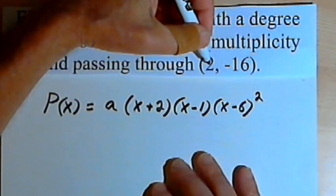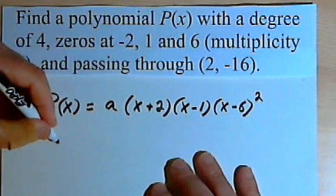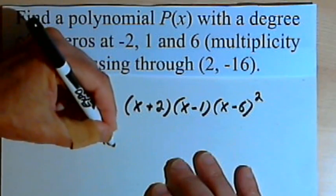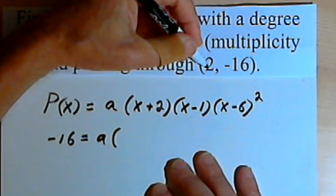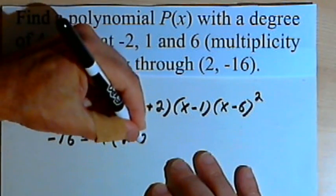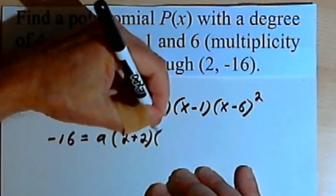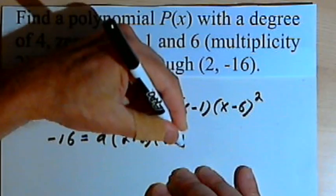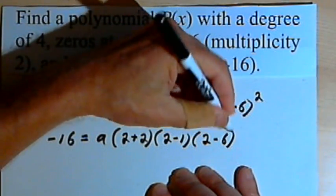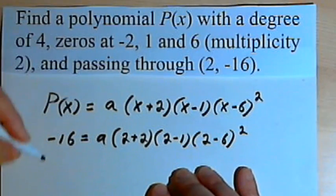The point is (2, -16). So I'm going to say negative 16 equals a times... and then instead of my x's I'll put in 2's. (2 plus 2) times (2 minus 1) times (2 minus 6) squared.